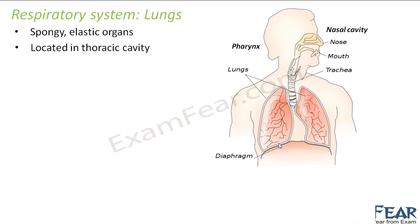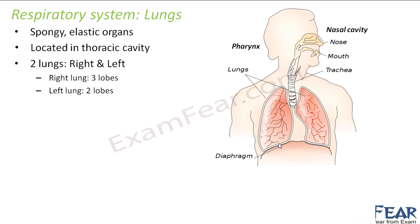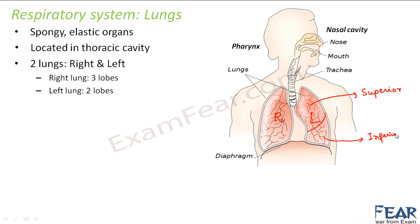There are two lungs in the human body: the right lung and the left lung. The left lung is divided into two lobes — the upper lobe is known as the superior lobe and the lower lobe is known as the inferior lobe. Superior means above, so the lobe on the upper side is superior and the one on the lower side is inferior.